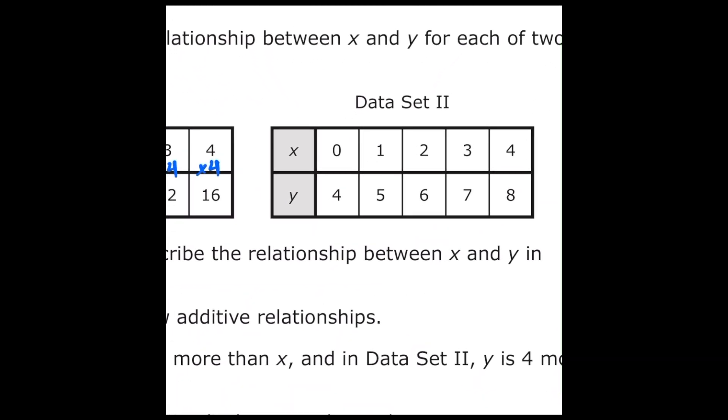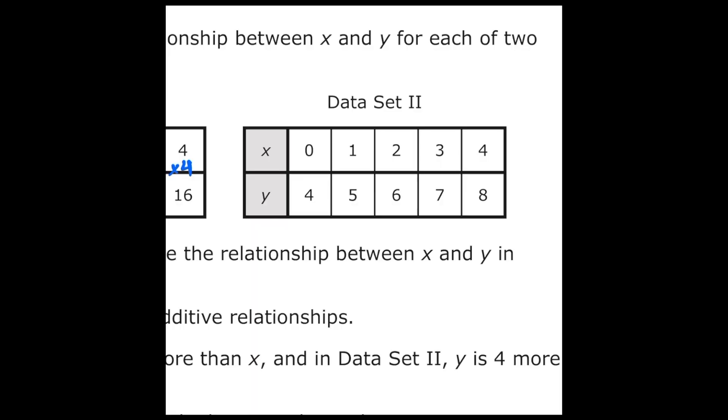Over on data set two, I'm going to do the same process. This time I notice that every x value is having four added to it to get the y value. So I'm going to write plus four all the way across, and then I'm also going to write plus four to the side just so that I don't forget.